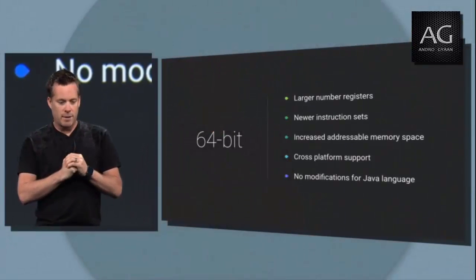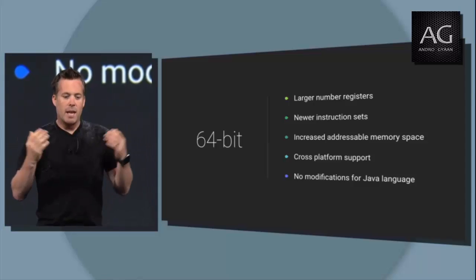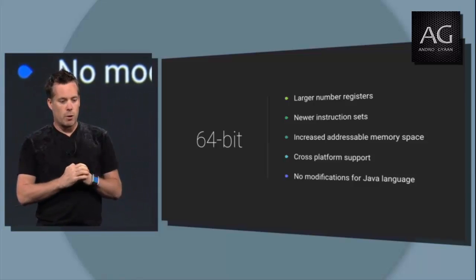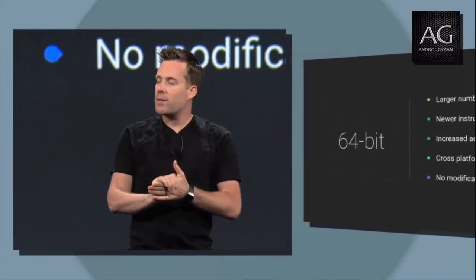To take advantage of 64-bit, we've added support for new ABIs in the NDK: ARM V8, x86-64, and MIPS64. And of course, if your app is written in Java, it will work with absolutely no modification on new 64-bit hardware. So that's CPU performance. The other side of the coin is GPU performance — graphics — and I'm really excited about some of the things we're doing in L in this area.